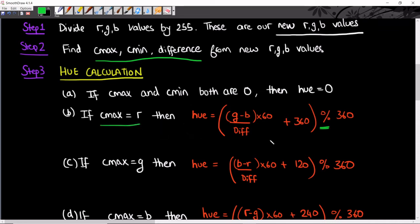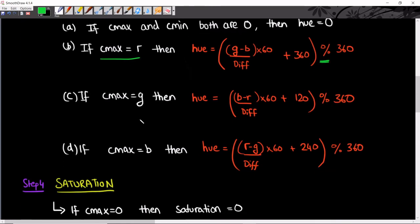Similarly, input your G and B values, divide by difference, multiply by 60, add 360, and take the remainder after dividing by 360—that's your hue value. If C max is G, apply a similar formula. If C max is B, you've got another similar formula. If C max and C min are both 0, then hue is 0.